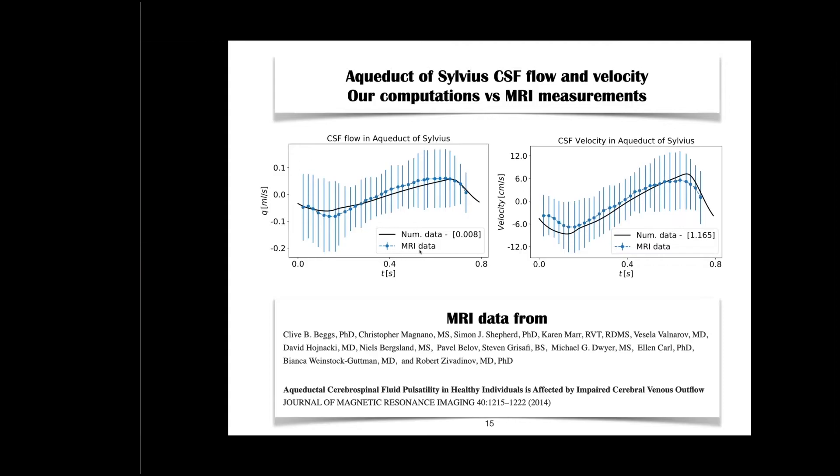So, here, what we are doing is to compare – we are comparing here in the aqueduct of Sylvius, the CSF flow here, Q, and we are comparing this here. This is the prediction in the black line here. This is the cardiac cycle here, time, and we compare with measured data obtained from this very large team of researchers here. And then we look at velocities, and we see that the agreement, I must admit, is surprisingly good. There will never be a 100% agreement. There cannot be a 100% agreement for a good number of reasons.